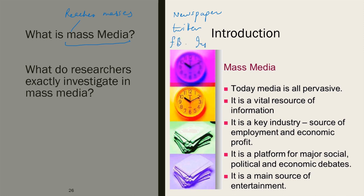Why do people want to study mass media? Businesses want to target the audience for their advertisements. They want to know which form of mass media is producing the best results. They want to study correlations — for example, the effect of violence on children — so they won't show such violence-related content in their advertisements. The purpose of mass media research is for the benefit of public health, and it also helps businesses figure out which form of advertisement will work.